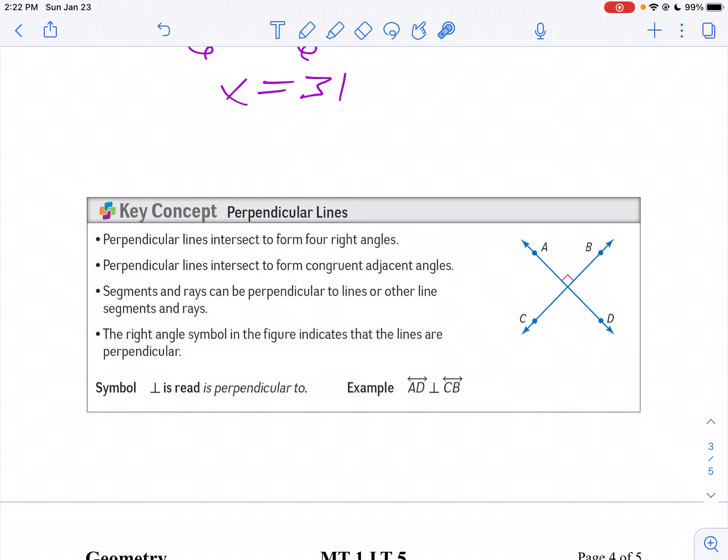The symbol for a right angle is a box. If I see that box, that tells me the lines are perpendicular. When two perpendicular lines intersect, four right angles are formed.